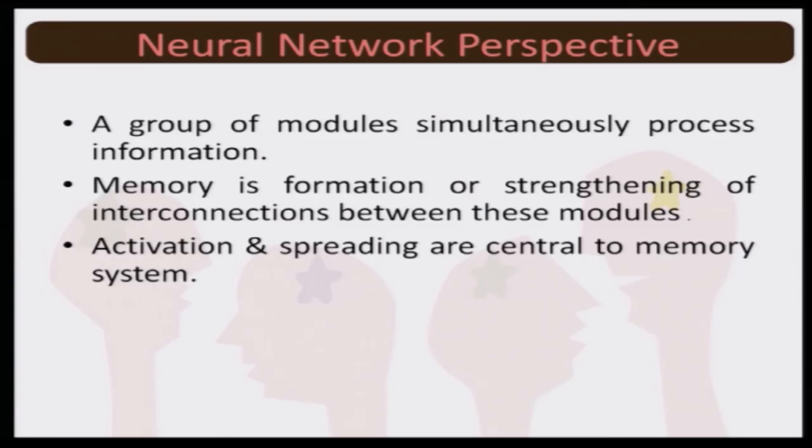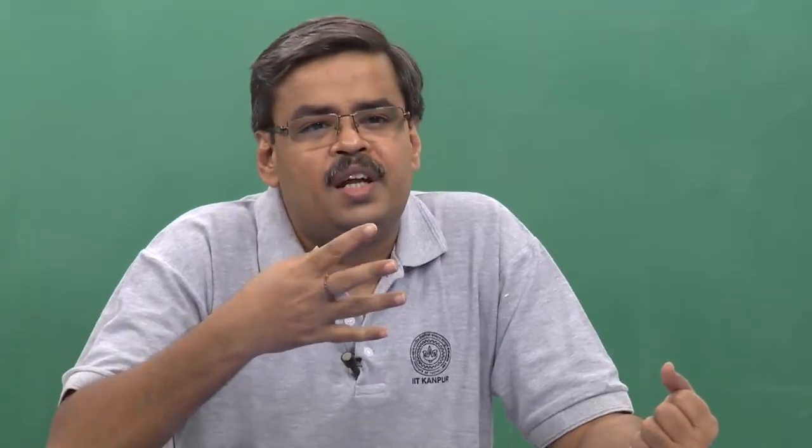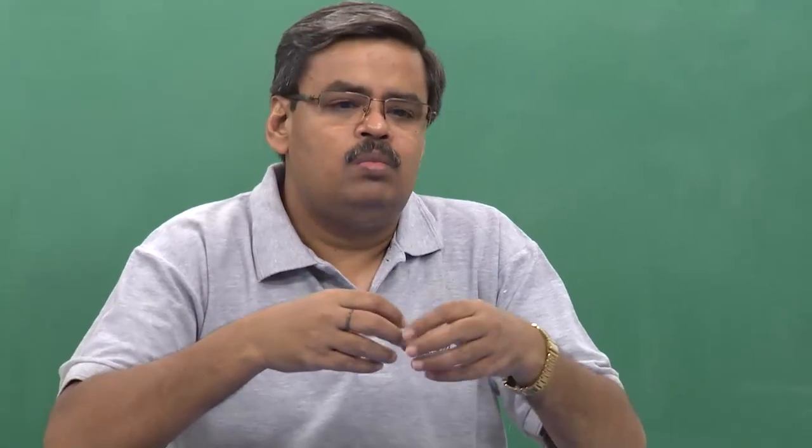What happens is: you get information from the external environment, you encode the information, and you have modules which entertain that encoded information. Once traces are formed, when repeated a second time it gets strengthened. Two or more modules get interconnected, and when this formation is repeated and strengthened, you are able to store the information. More formation of modules and more connectivity between different modules means more spreading takes place and you have better memory. The stronger the association, the wider the network, and the better the memory. When you activate it, this is how the memory system gets operationalized — this is the neural network perspective.